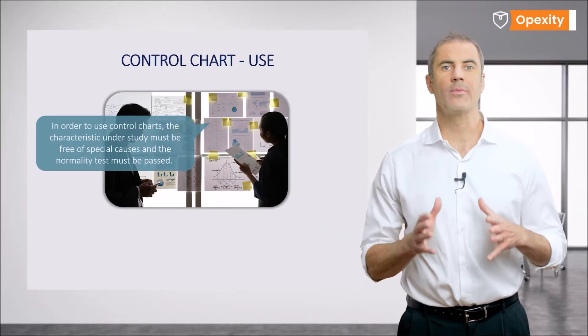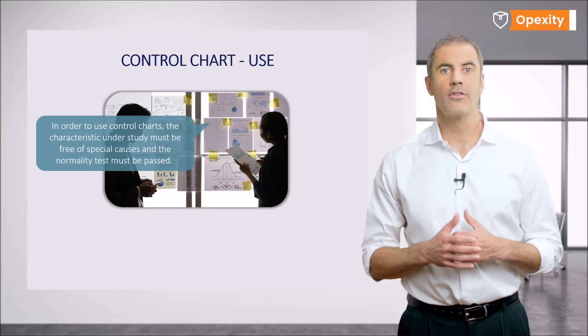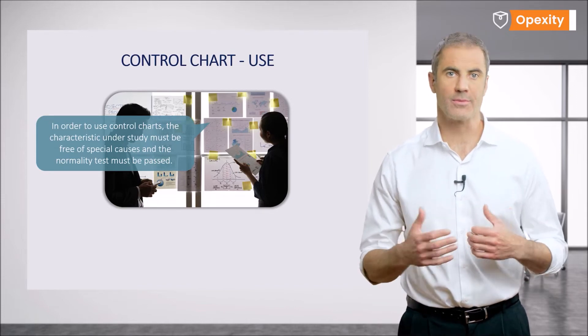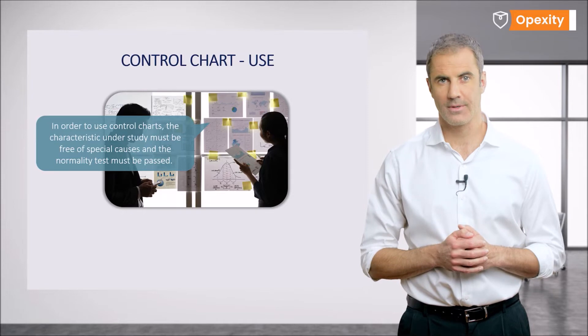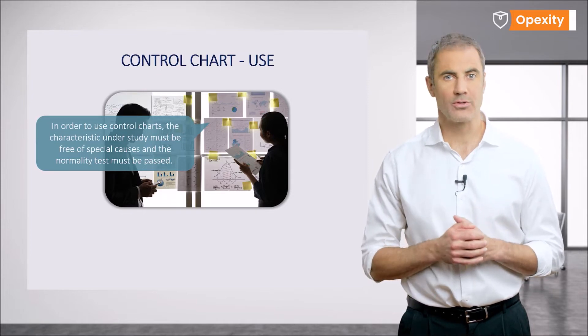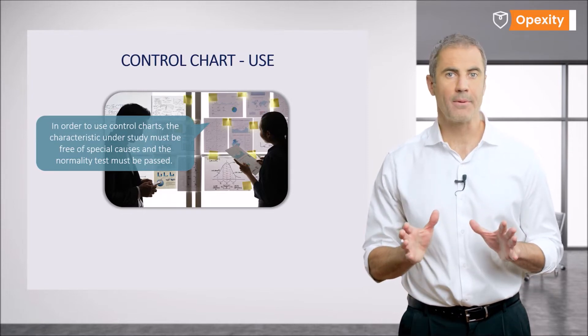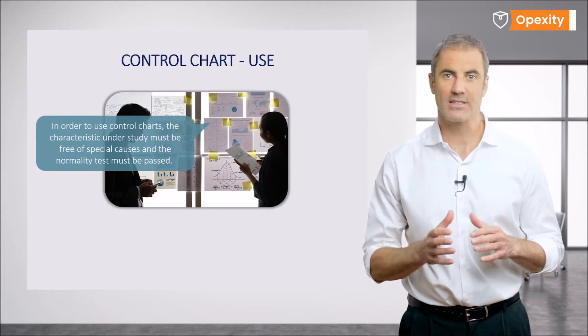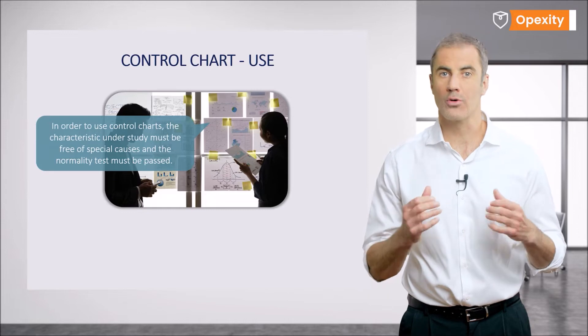In the event that the normality test is not passed, the process may not be controlled, or it needs to be worked on and improved to become so. Statistics where special causes appear very rarely pass normality testing and these disturbances are the main reason for the existence of processes that are under no control.